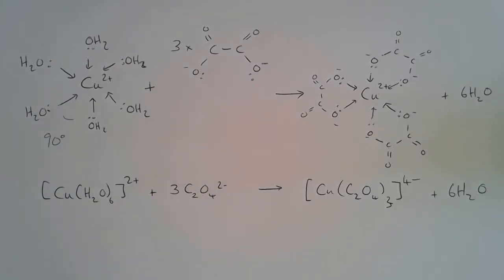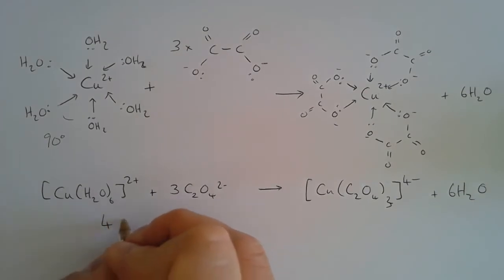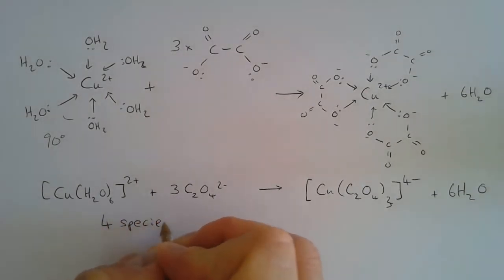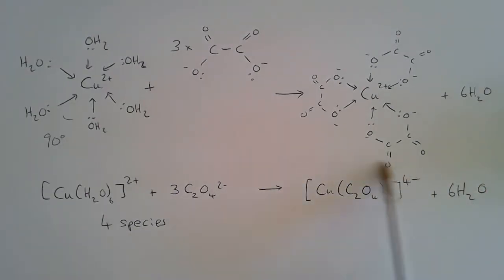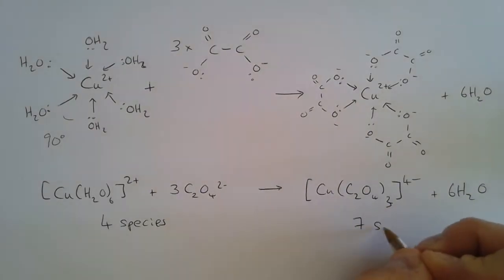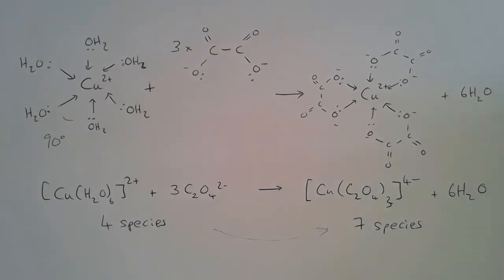In terms of the number of species — molecules or complexes — on the reactant side we have one copper complex and three ethane dioate ions, giving four distinct species. In the products we have one complex and six water molecules, giving seven species in total. So we've gone from four species to seven species.